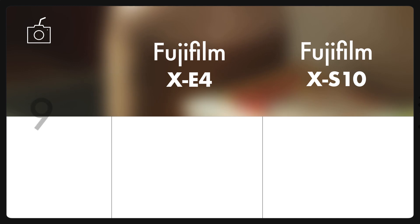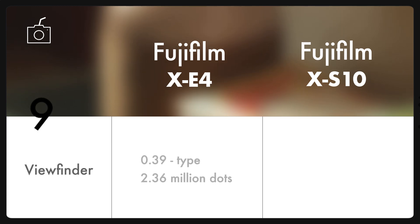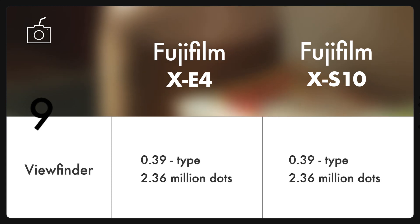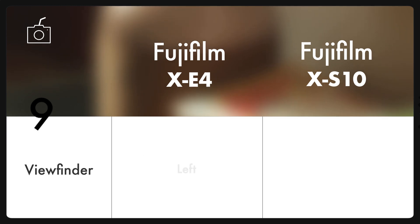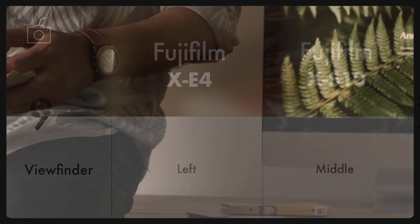Both cameras have a 0.39-inch 2.36 million dot EVF, but the difference is that on the XE4 it's on the left side, and on the XS10 it's in the middle.